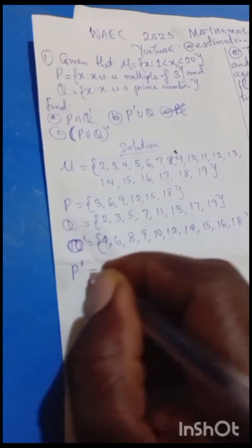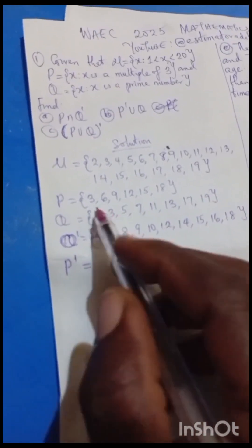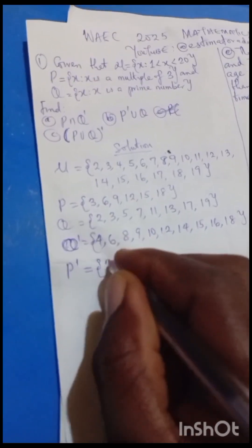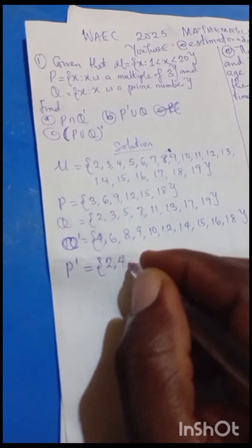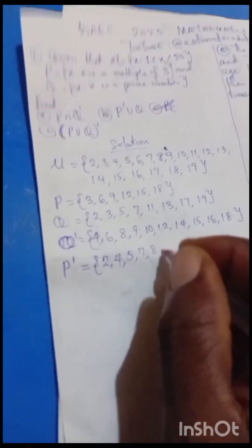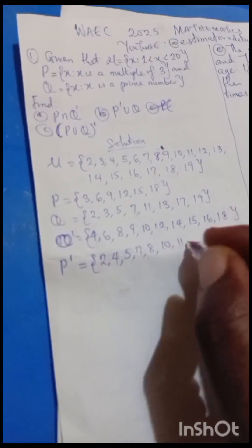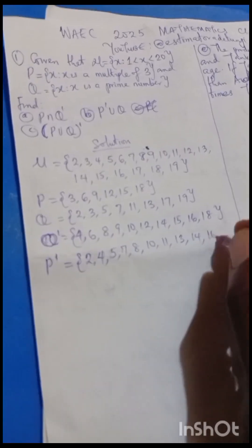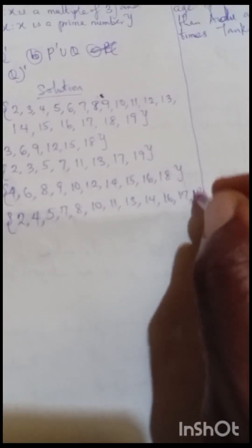We may also want to use P complement, so let's spell it out so our question will be answered without wasting time. The elements in the universal set that are not in P — that is P complement — are: 2, 4, 5, 7, 8, 10, 11, 13, 14, 16, 17, 19.